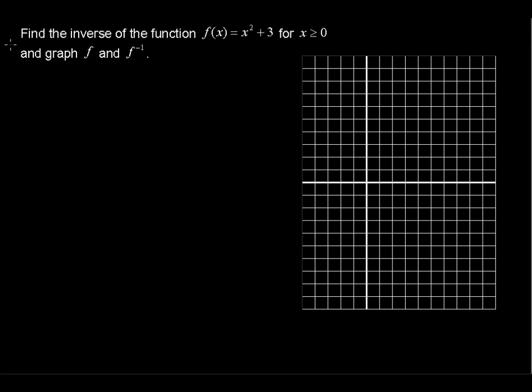Find the inverse of the function f of x equals x squared plus 3, for x is greater than or equal to 0, and graph the function f and the inverse of f.